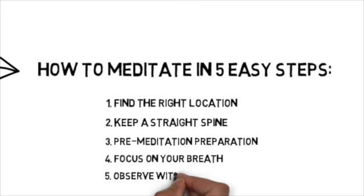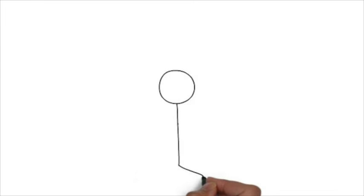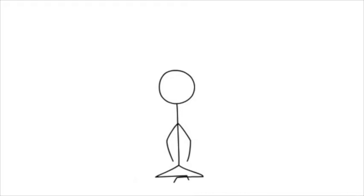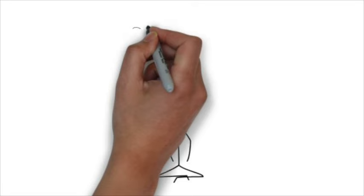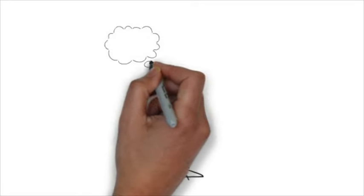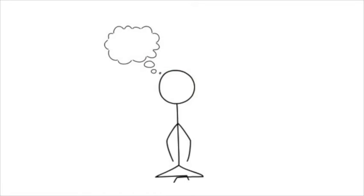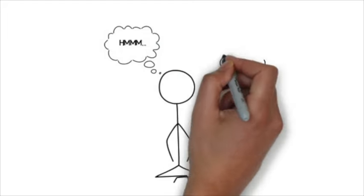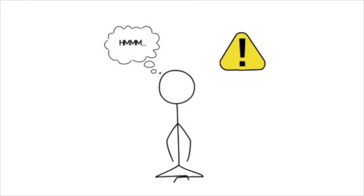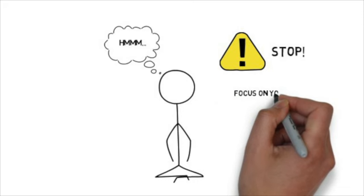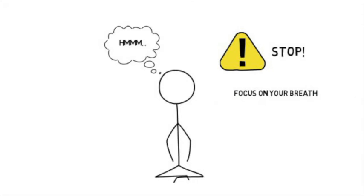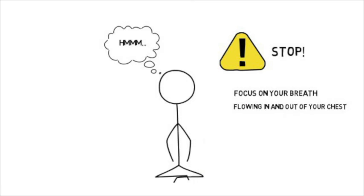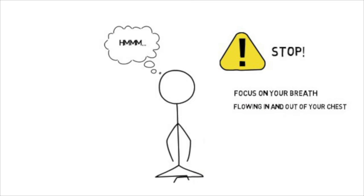Step number five: observe without judgment. During a breathing meditation like this, you may find that your mind wanders a lot. It's okay, this is totally natural. You may also notice yourself judging the sensations that you observe. When you do notice your mind wandering or making these judgments, simply cut off that thought pattern and shift your attention right back to your breathing. With practice, this becomes easier and easier to do, and you will experience the full benefits of meditation.